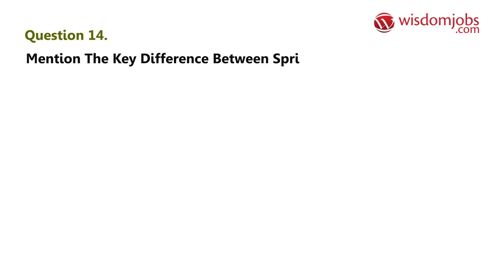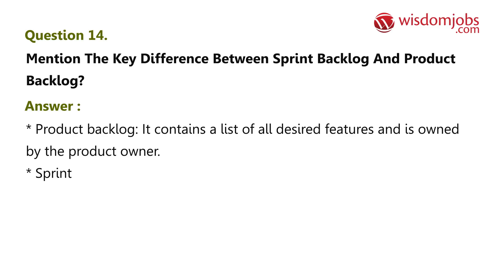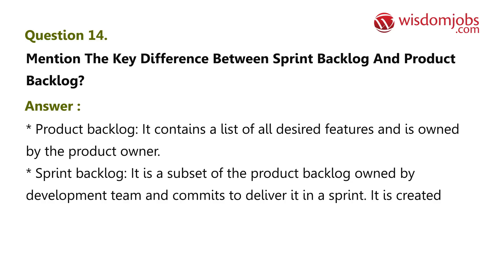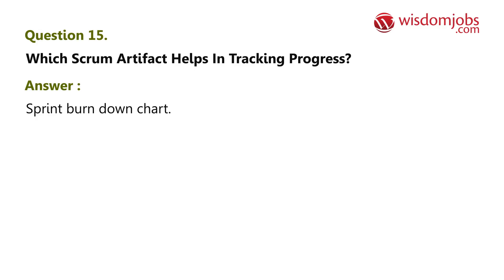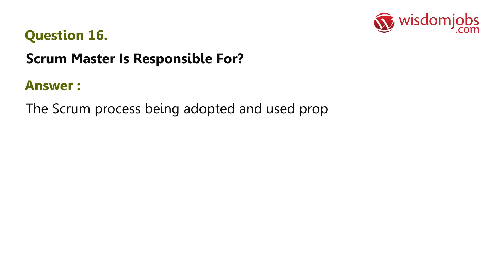Question 14: Mention the key difference between sprint backlog and product backlog. Answer: The product backlog contains a list of all desired features and is owned by the product owner. The sprint backlog is a subset of the product backlog, owned by the development team, who commits to deliver it in a sprint — it is created in the sprint planning meeting. Question 15: Which scrum artifact helps in tracking progress? Answer: Sprint burn-down chart. Question 16: The scrum master is responsible for the scrum process being adopted and used properly.